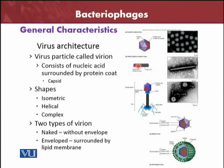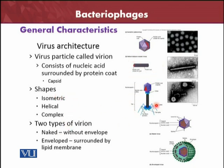Here you can see the same thing — the nucleic acid and the protein coat — but the structure is different. This can be seen under electron microscopy: this is the helical structure and this is the rod-shaped virus. Here you can see the whole virus — the T-phage, P4-phage — and its shape may be isometric, helical, or complex. It may contain all the structures inside it, with tail fibers here and the head here. The nucleic acid shown in red can be seen under the electron microscope. The shape may be icosahedral, helical, or complex.